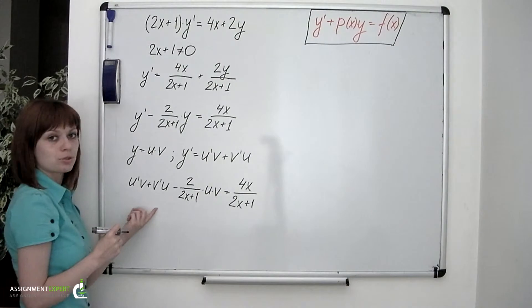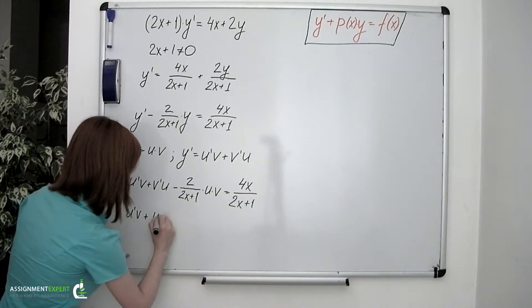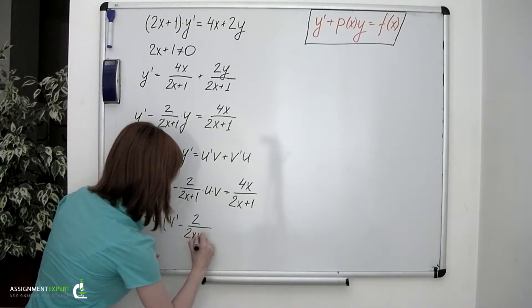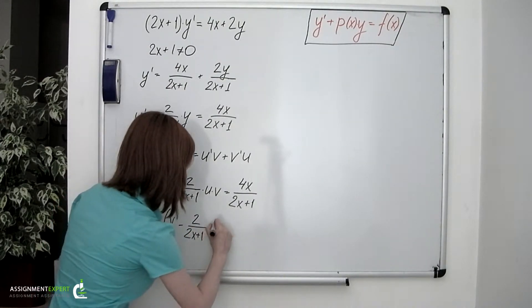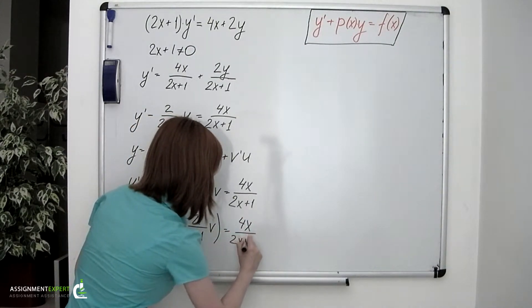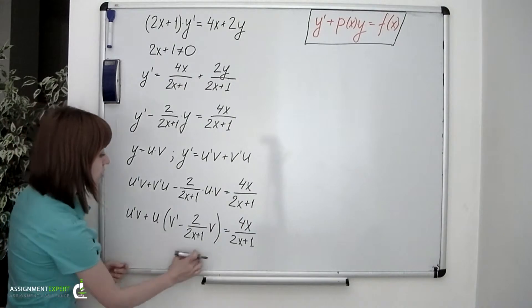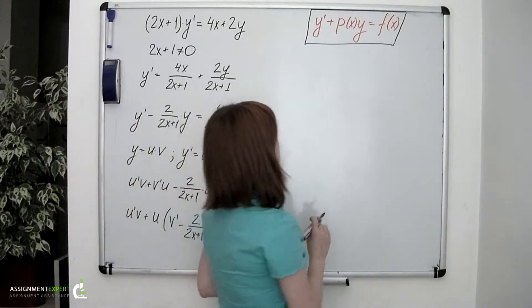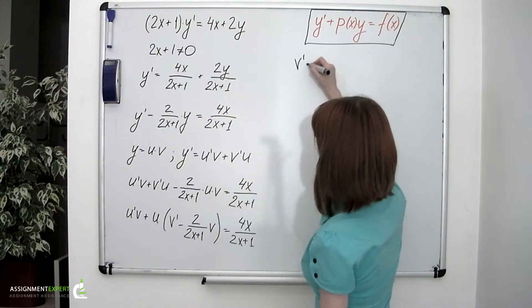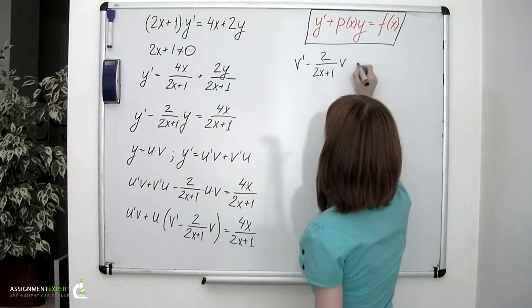We can factor out u on the left to get u'v + u · [v' - 2/(2x+1) · v] = 4x/(2x+1). We choose the v function such that the expression within these brackets equals 0, giving us the equation: v' - 2/(2x+1) · v = 0.